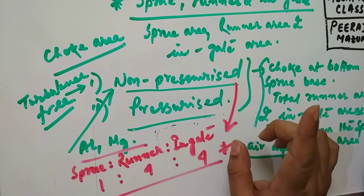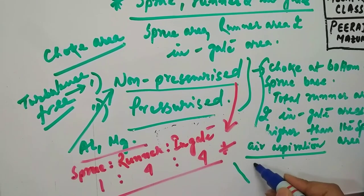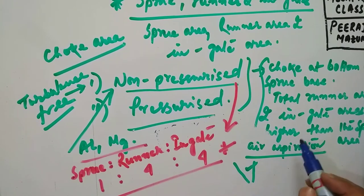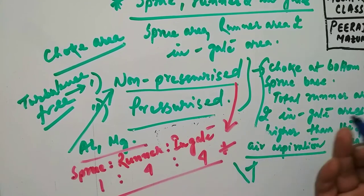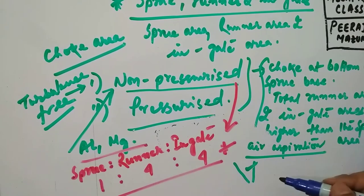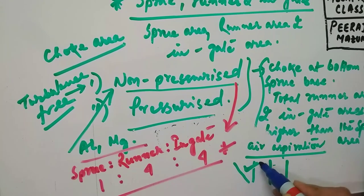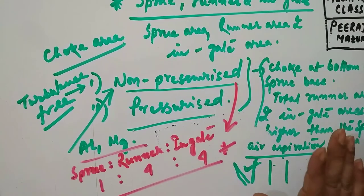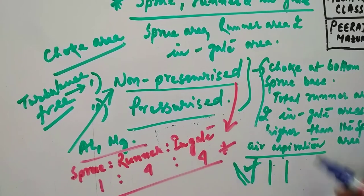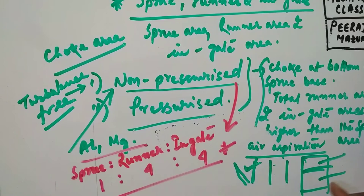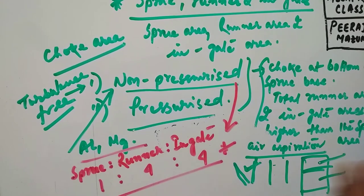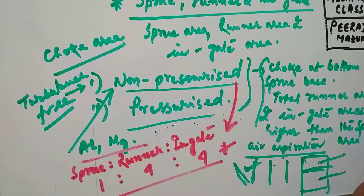Tapered sprues are invariably used with non-pressurized systems to avoid this aspiration effect. The sprues are always tapered, not straight. Also, the runners are maintained in drag while the gates are kept in cope, to ensure the runners are full. Casting yield gets reduced because of the large metal involved in the runner and gates for this particular non-pressurized system.